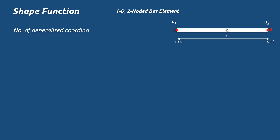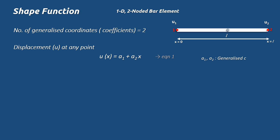The number of degrees of freedom determines the number of constant coefficients in the function. Here the degrees of freedom is 2, so there are two constant coefficients, or generalized coordinates. Therefore, the displacement at any point is: u(x) = a1 + a2·x, where a1 and a2 are the generalized coordinates. In matrix form: u(x) = [1  x] · {a1  a2} — let this be equation number 2.